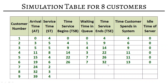Customer 7 arrives at twenty-four but the system is busy until thirty-two, so service begins at thirty-two. Waiting time is thirty-two minus twenty-four equals eight minutes. Service ends at thirty-two plus two equals thirty-four. Customer spent eight minutes waiting plus two minutes service, totaling ten minutes. Idle time is zero. Customer 8 arrives at thirty-two; service begins at thirty-four after waiting two minutes. Service time is three minutes, so service ends at thirty-four plus three equals thirty-seven. Customer spent two minutes waiting plus three minutes service, totaling five minutes. Idle time is zero. Customer 9 arrives at thirty-nine — the system was free since minute thirty-seven — so service begins immediately at thirty-nine with zero waiting time. Service ends at thirty-nine plus four equals forty-three. Customer spent four minutes. Server was idle from minute thirty-seven to thirty-nine, so idle time is two minutes.